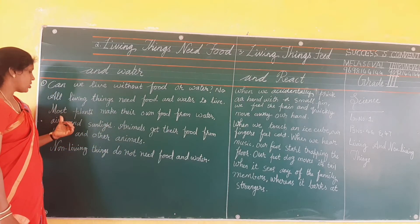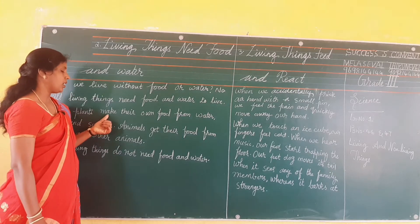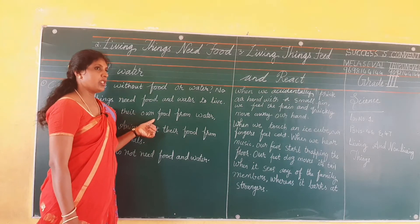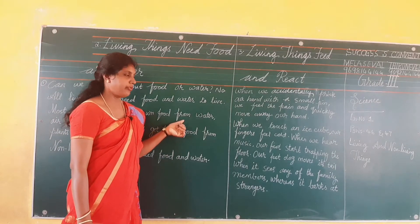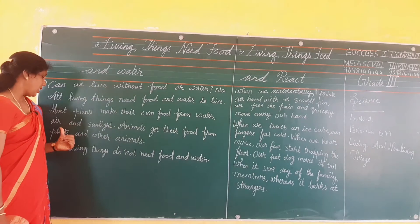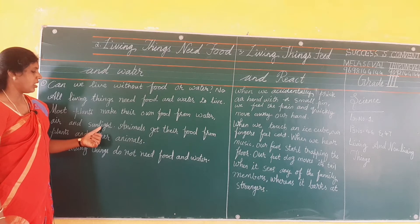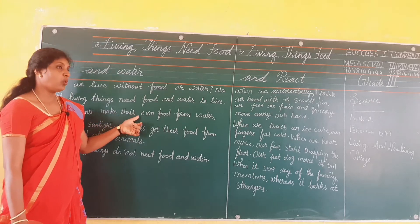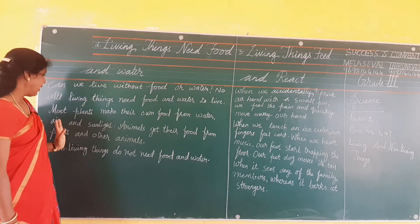Next. Most plants make their own food. M-O-S-T, Most. P-L-A-N-T-S, Plants. M-A-K-E, Make. T-H-E-I-R, Their. O-W-N, Own. F-O-O-D, Food. F-R-O-M, From. W-A-T-E-R, Water. A-I-R, Air. A-N-D, And. S-U-N-L-I-G-H-T, Sunlight. Most plants make their own food from water, air, and sunlight.